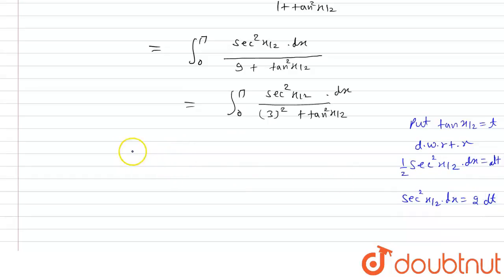Now from here we have integral of dt and this sec square x by 2 is constant so we can write it outside the integral upon 3 square plus t square. And now lower limit will be put x is equals to 0 that is tan 0 so tan 0 is 0 and put upper limit pi so this will be tan pi by 2 and tan pi by 2 is infinite. So the new limit is 0 to infinite.